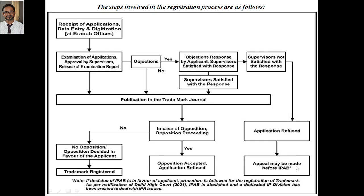An appeal may be made before the IPAB — the Intellectual Property Appellate Board. However, IPAB has been diluted and a separate IP division has been created for trademarks. So if everything goes wrong through the examination stage, this is what happens — refusal and then appeal.